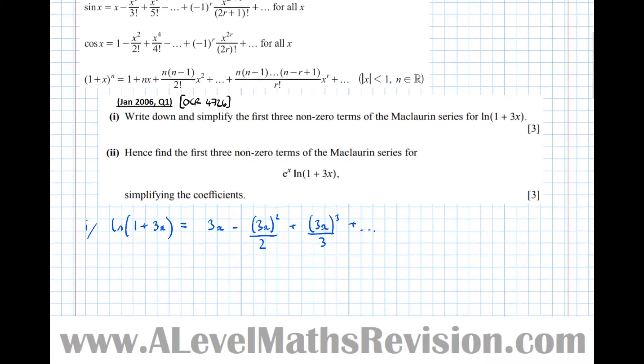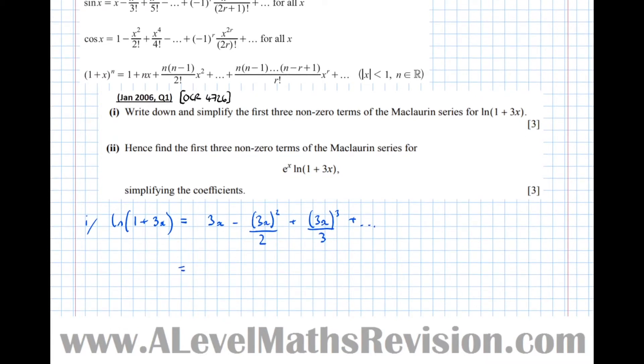We only wanted the first three terms, so that's it, we're done for that. But we need to simplify though, the question did ask us to simplify. Equals 3x take 9 over 2x squared plus, so 3 cubed divided by 3 is 9x cubed and so on. So that's the first part answered.